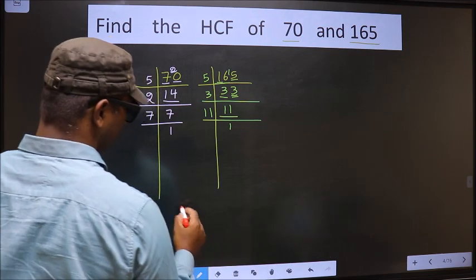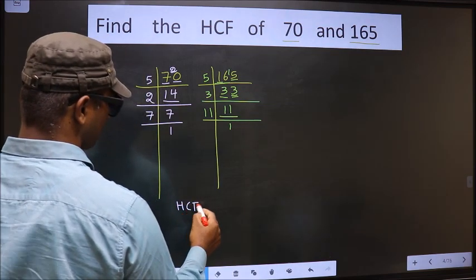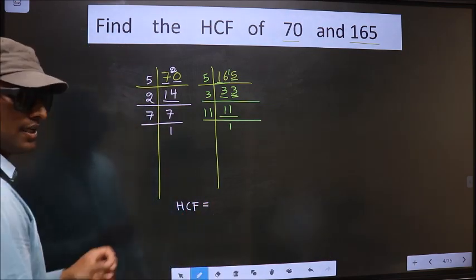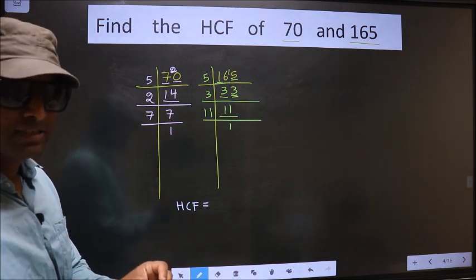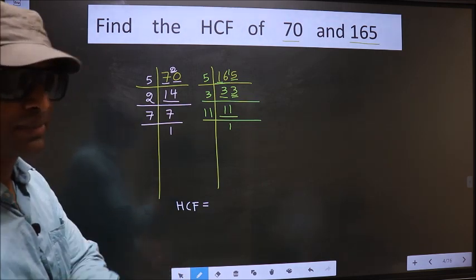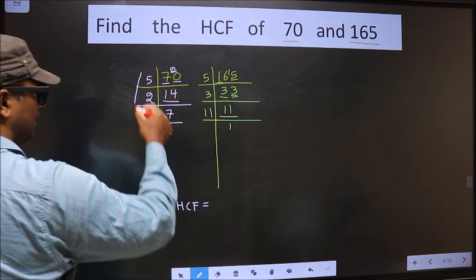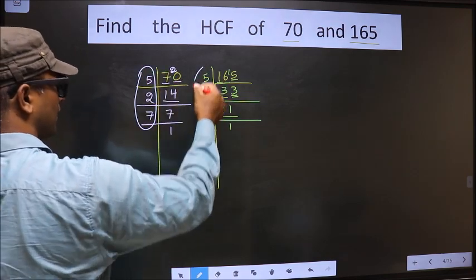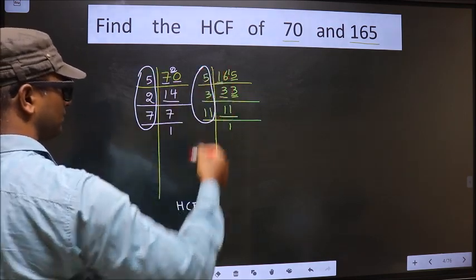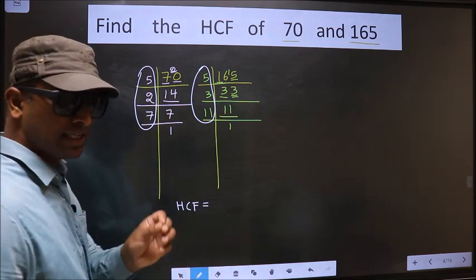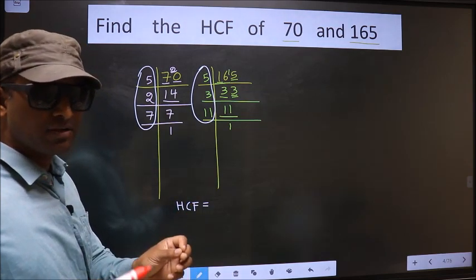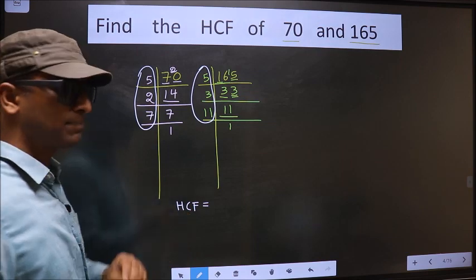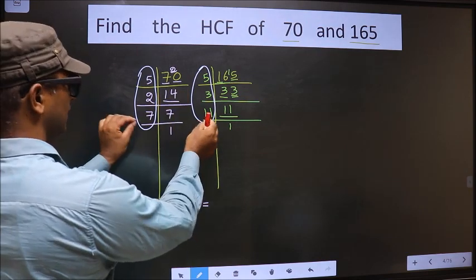Now our HCF is - HCF is the product of numbers which should be present here and also here. I repeat, HCF is the product of numbers which should be present in these two places.